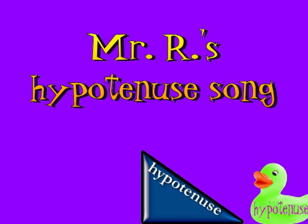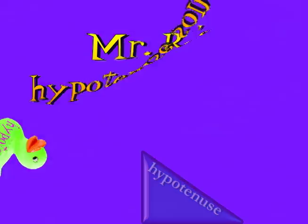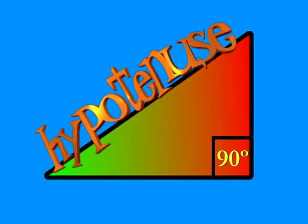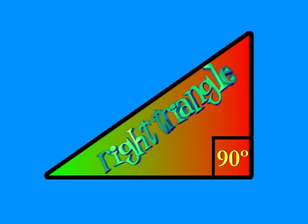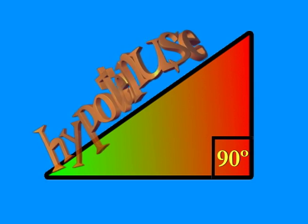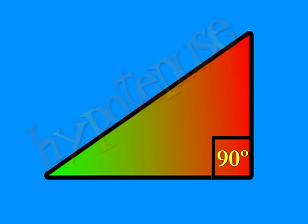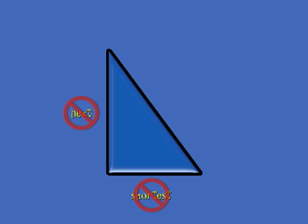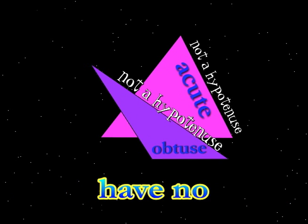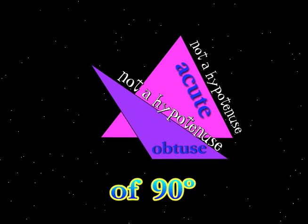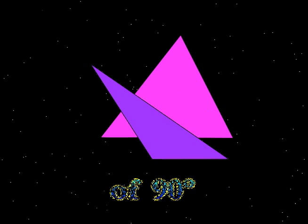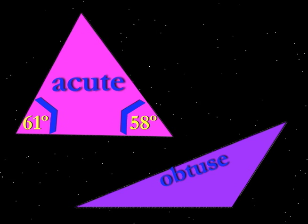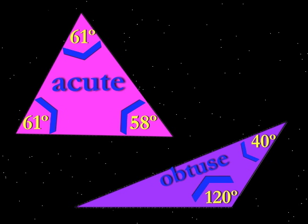Hypotenuse. Right triangle — it's the longest side. Like a playground site, they won't want to tangle. Acutes and obtuses have no hypotenuse — now no angles of 90 degrees.